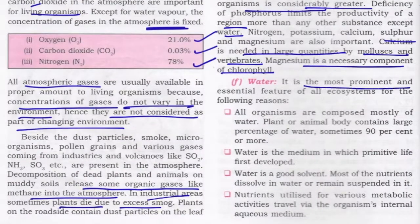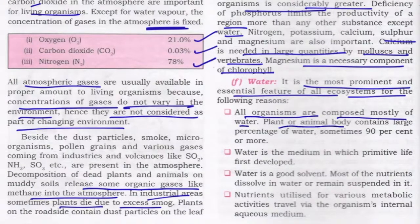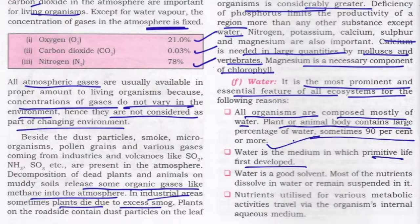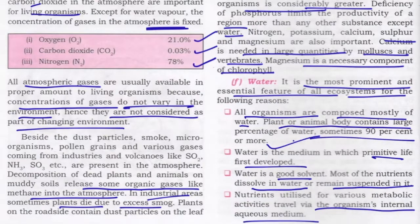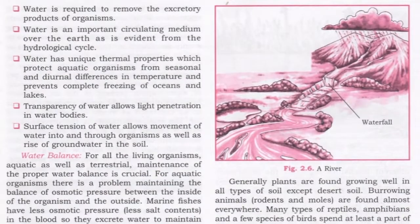Water is the most prominent and essential feature of all ecosystems. All organisms are composed mostly of water — about 90% of a plant or animal body is made up of water. Water is the medium where primitive life first developed. Water is a good solvent; most nutrients dissolve in water or remain suspended in it, and nutrients utilized for metabolic activities travel through the organism's internal aqueous medium. Water is also required to remove the excretory products of organisms and is important as a circulating medium over the earth, as seen in the hydrological cycle.